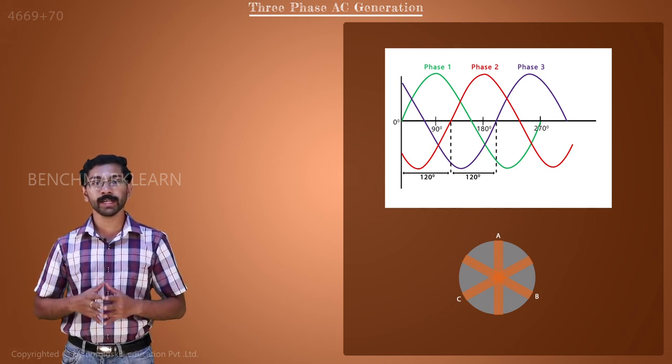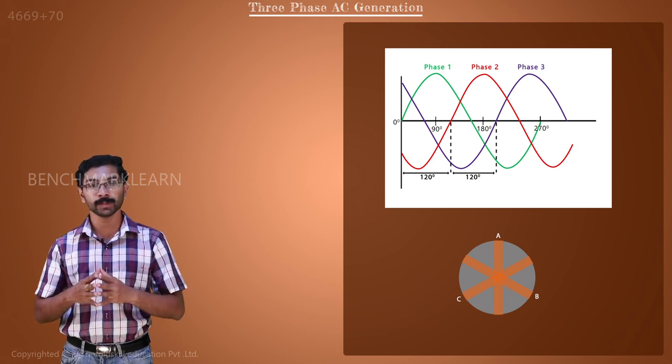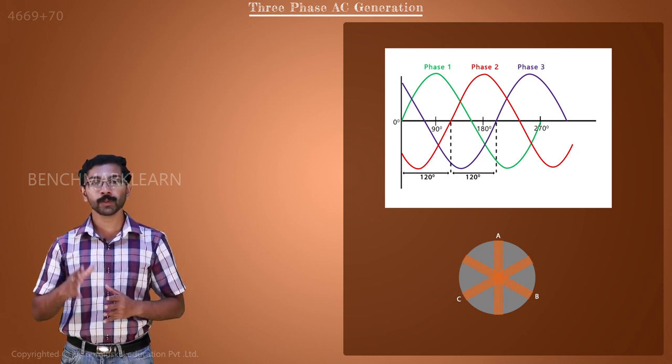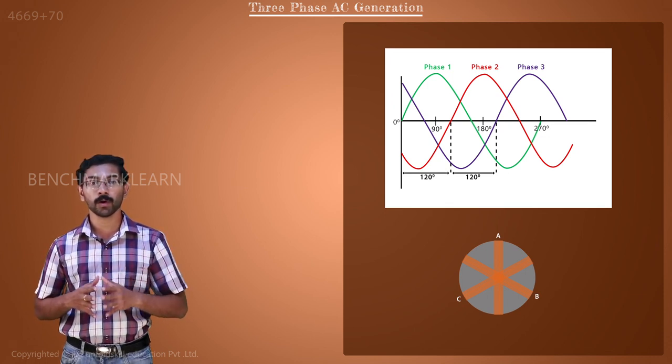When these coils are rotated in a magnetic field, three sets of EMFs are generated across the coils. They are suitably connected to get a three-phase supply at the output terminals of the alternator.